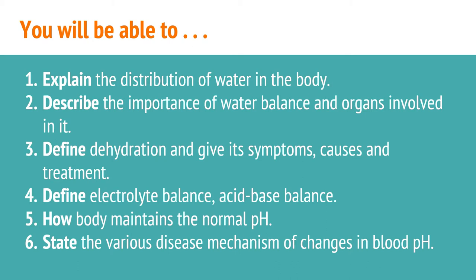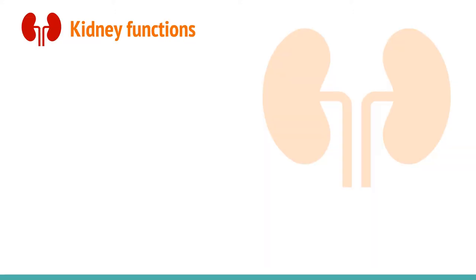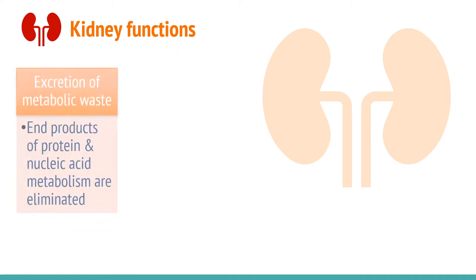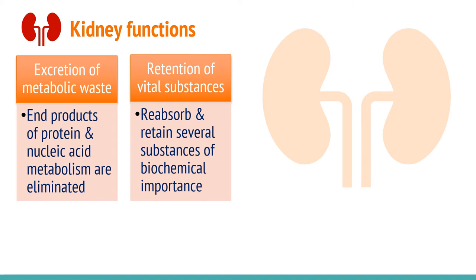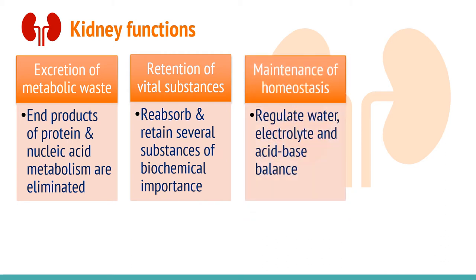Let's see what are the functions of the kidney that participate in the regulation of water, electrolyte and acid-base balance. The kidney forms urine by three processes: filtration, secretion, and reabsorption. By these three processes, the kidney excretes metabolic waste — the end products of protein and nucleic acid — and reabsorbs several substances of biochemical importance. In this way, it maintains homeostasis and regulates water, electrolyte and acid-base balance.